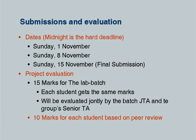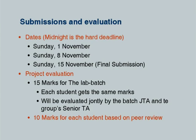The project evaluation: there are 15 marks for the group project. Each lab batch will get marks out of 15, and each student gets the same marks. So if a lab batch gets 12 out of 15, every student of that lab batch gets 12 — because he or she has participated in that group project. These group projects will be evaluated jointly by the batch JTA and the group senior team based on your submissions. This will be a growing evaluation — not done only for the final project report. What you submit every week is equally important in deciding how many marks out of 15 you will get.